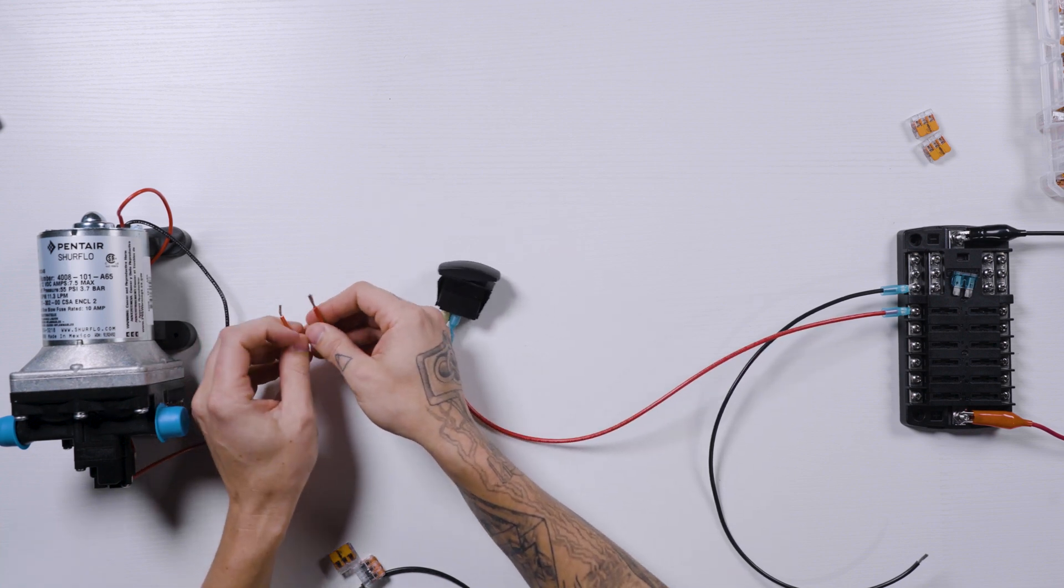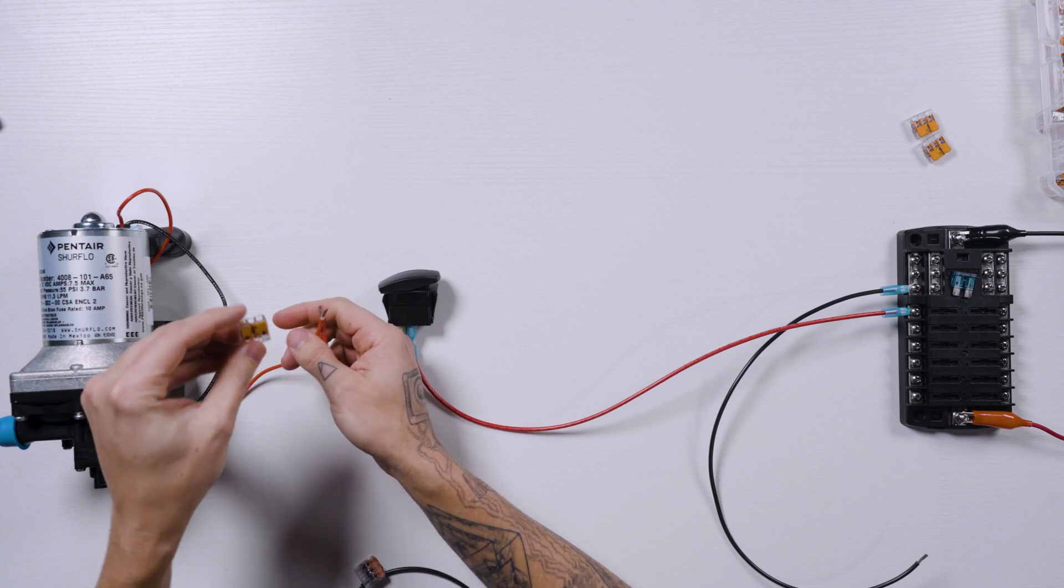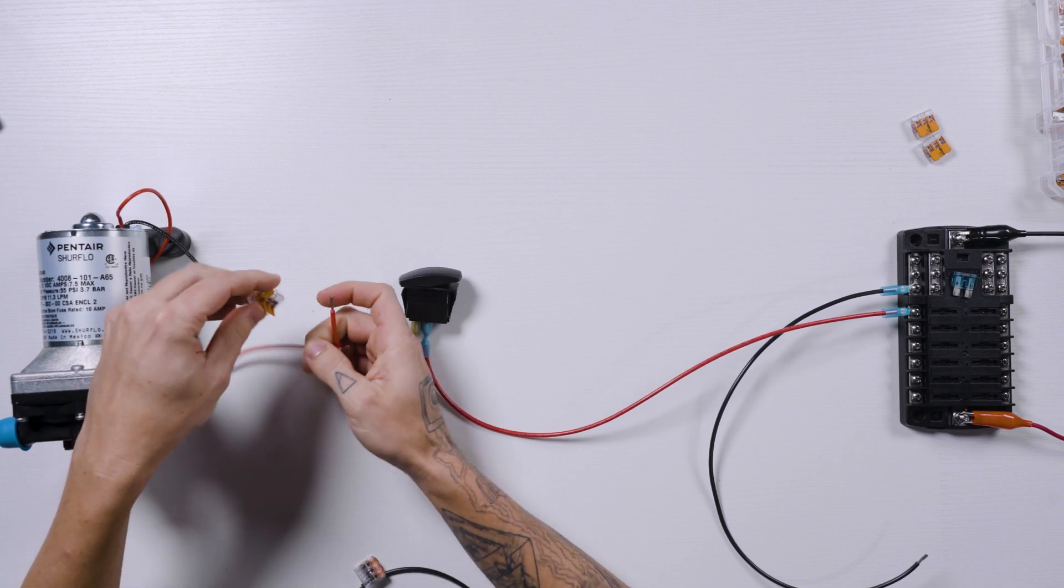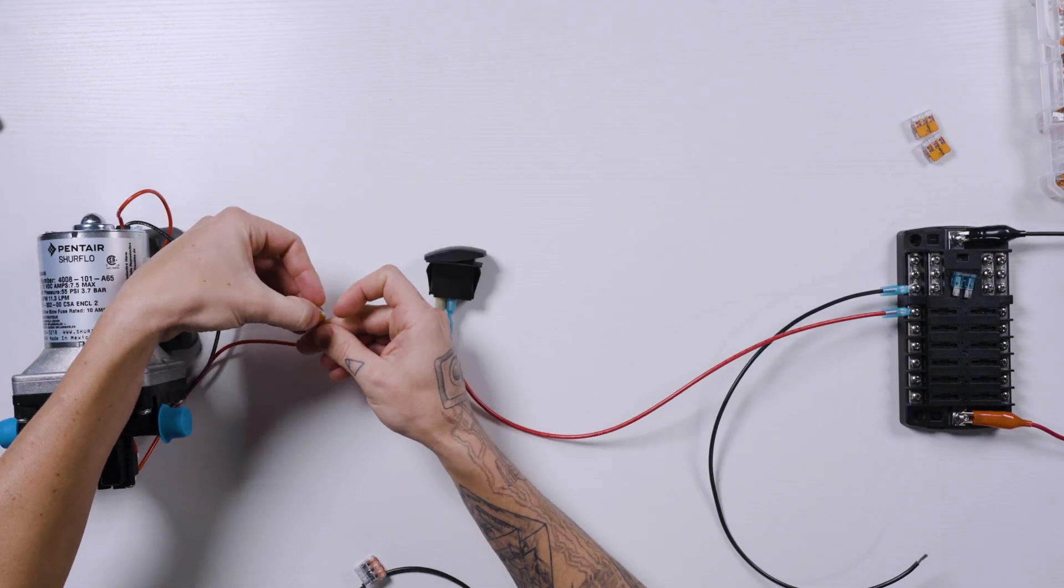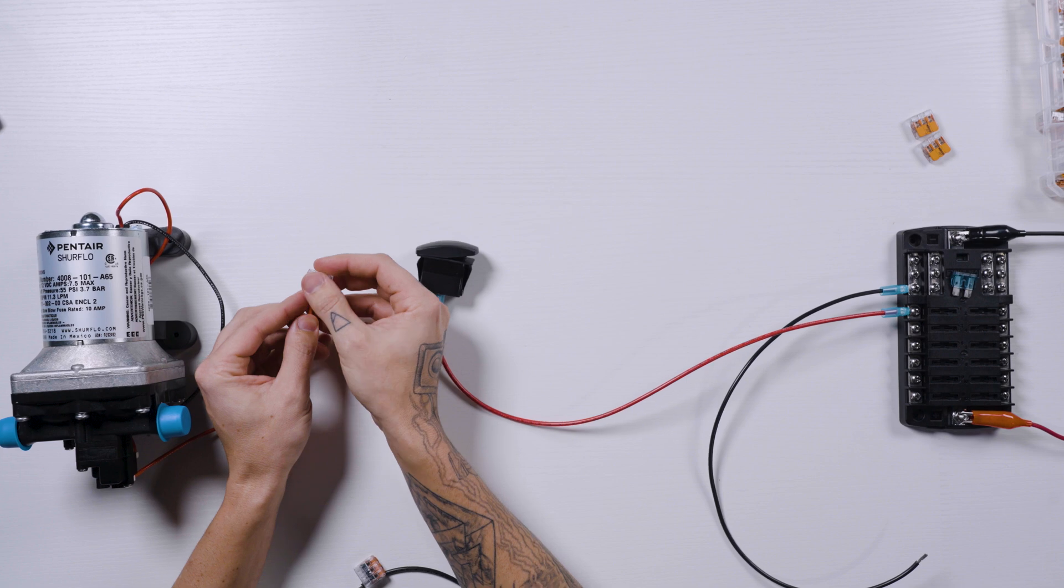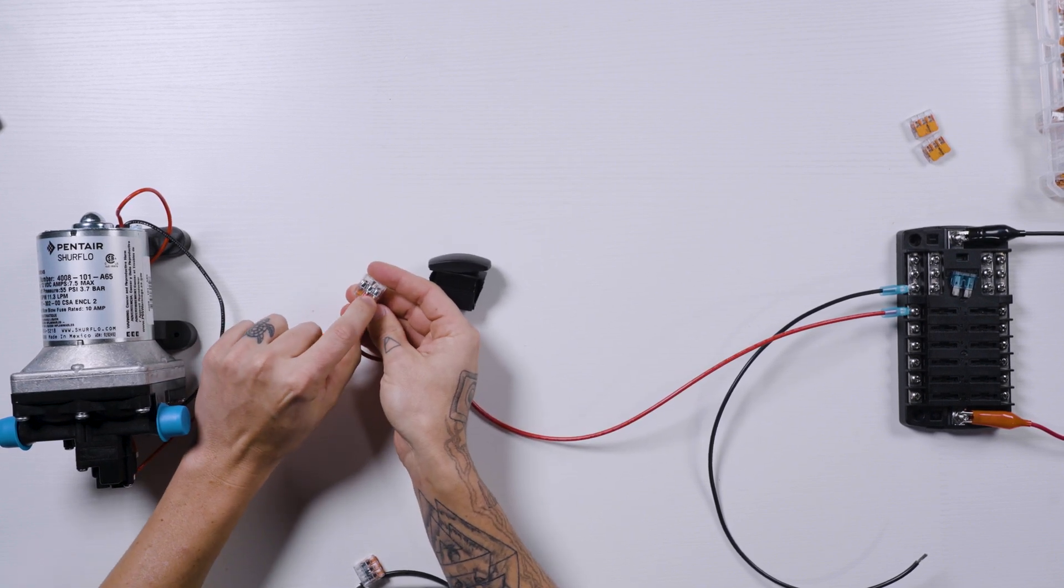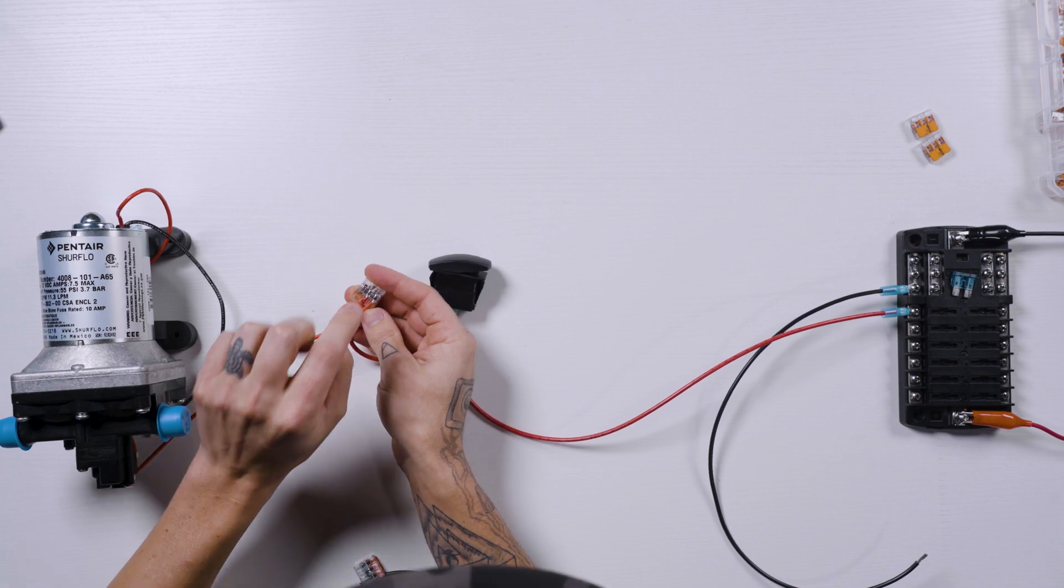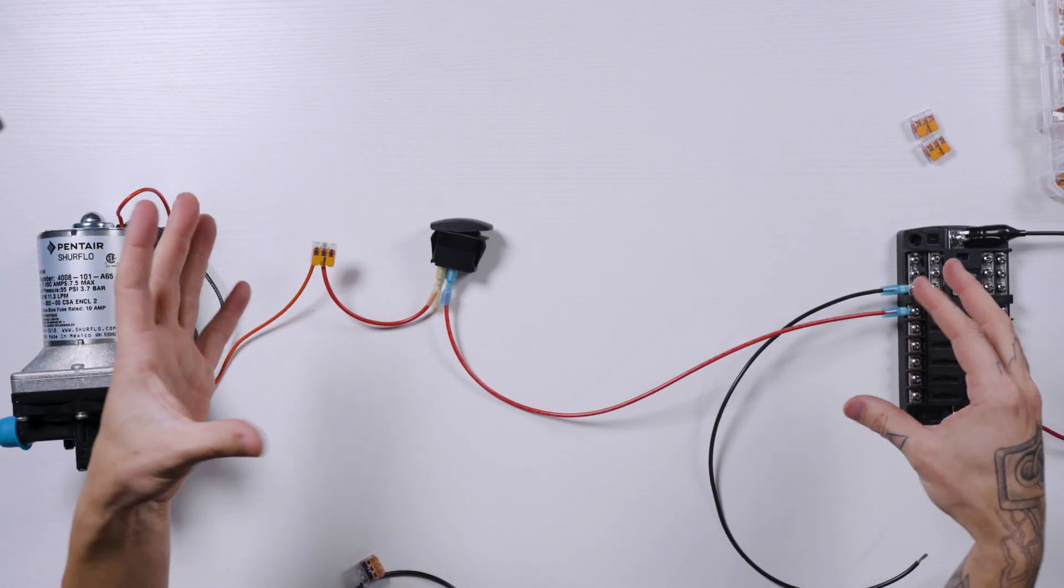Once we get the positive wire over to our pump, we're going to use a lever nut, flip our levers up, put the wires in place, flip the levers down, and then you have a visual check to make sure that our wires are fully seated in the back of this lever nut, and there's no insulation interfering with the connection. So that's the positive wire.